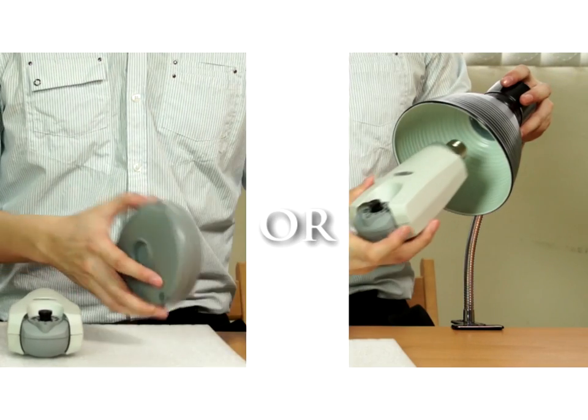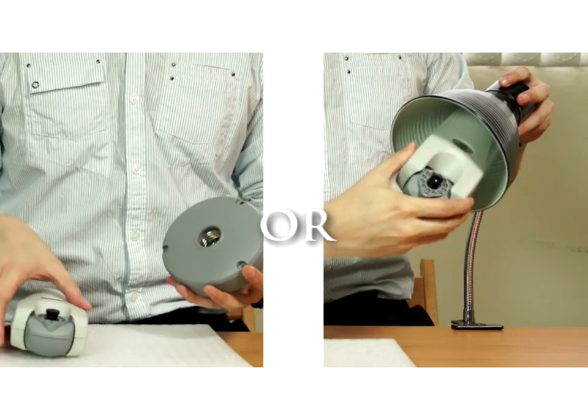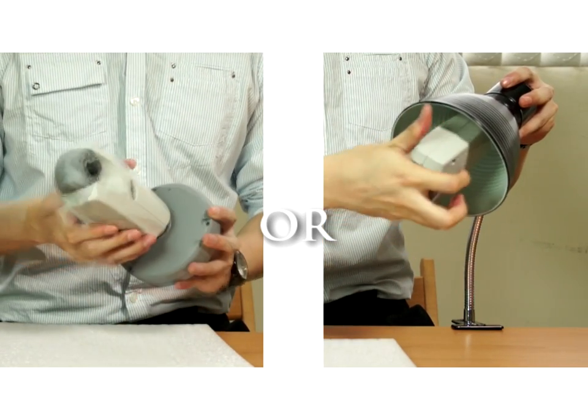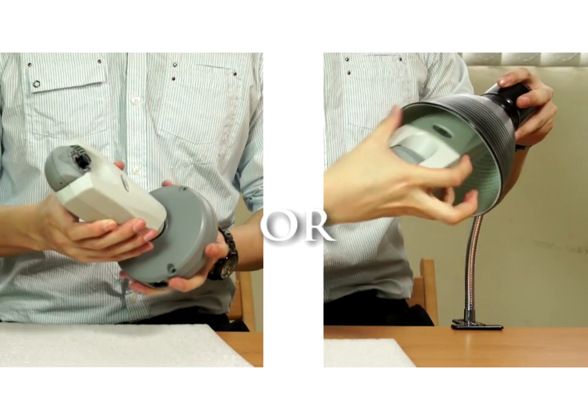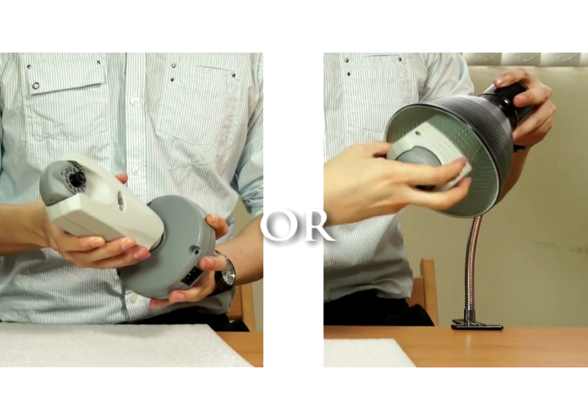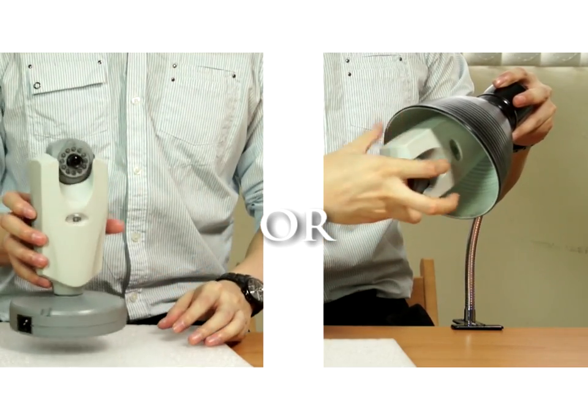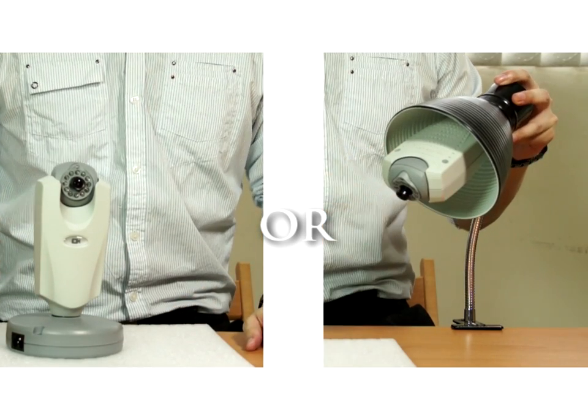To install the CLJ100L lamp type IP camera, you can use a household light socket or product base. Gently screw the camera clockwise until it's firmly tightened. Please do not overdo it.